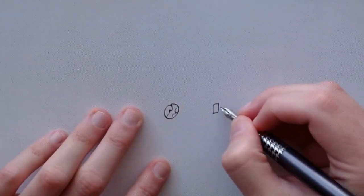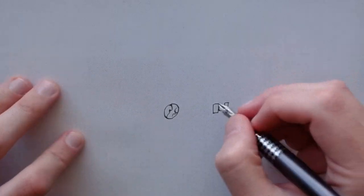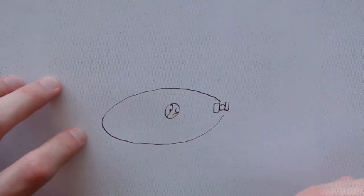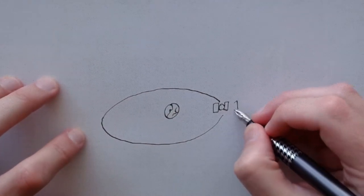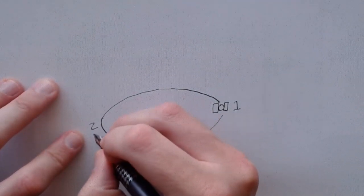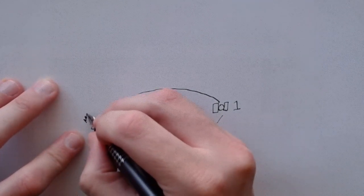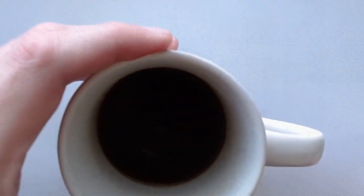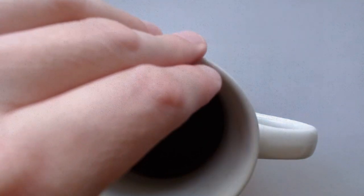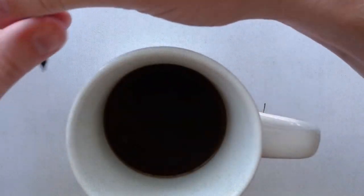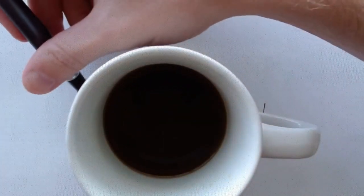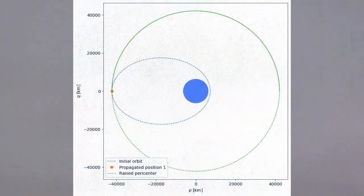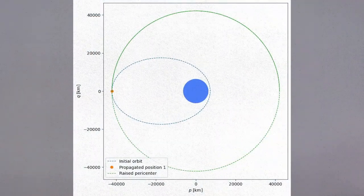Getting from one orbit to another is done by changing your velocity at a specific time. Increasing your forward velocity at the highest point in your orbit increases your altitude at the lowest point. Decreasing your velocity at the lowest point decreases your altitude at the highest point. Since we're in an elliptic orbit and the challenge wants us to get into a low-eccentricity, more circular orbit, we have to burn at our highest point, which is also called the ApoCenter.